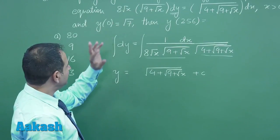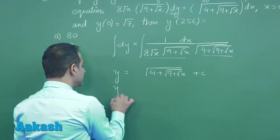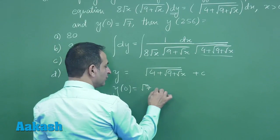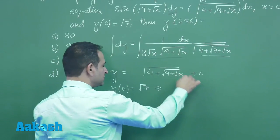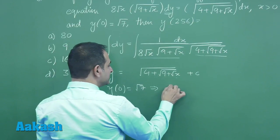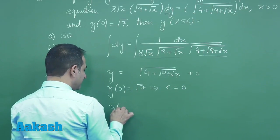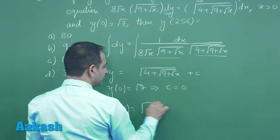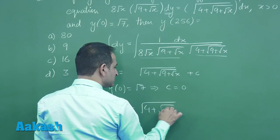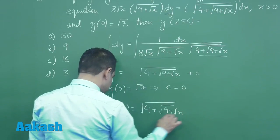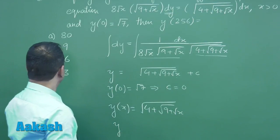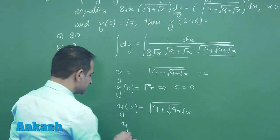So definitely the integration here is easier one and the integration is 4+√(9+√x). We have value at 0, y(0) is definitely √7. So from here if you substitute x equal to 0 then c will be 0. So the function itself is 4+√(9+√x).